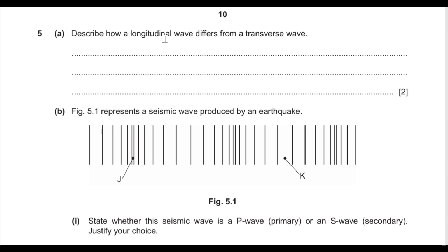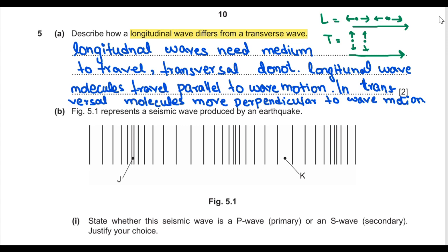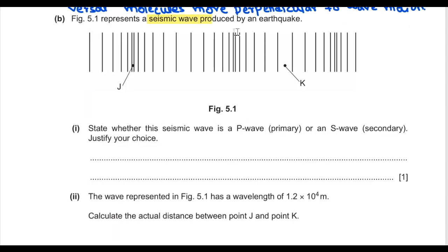Question 5: describe how longitudinal waves differ from transverse waves. In longitudinal waves, particles vibrate parallel to the direction of wave motion; in transverse waves, particles vibrate perpendicular to the direction of wave motion. Longitudinal waves need a medium to travel — sound is an example. Transverse waves do not need a medium — light is an example.